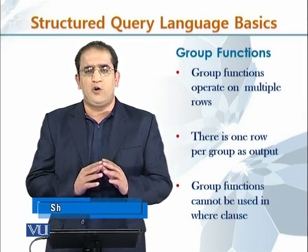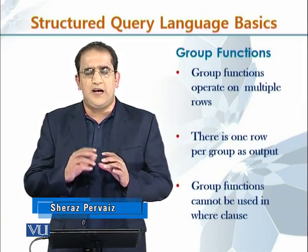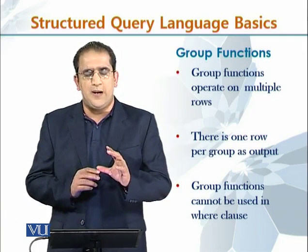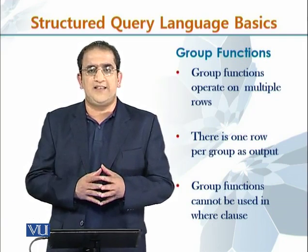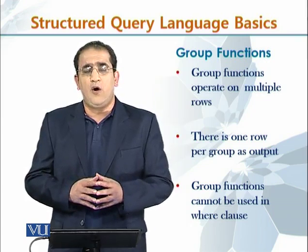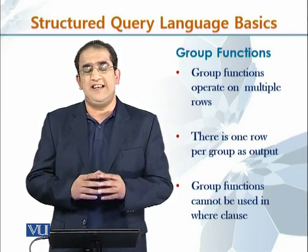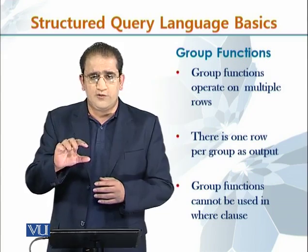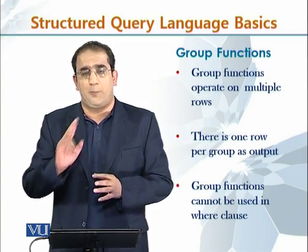For example, if you have 14 rows and the total number of groups is 7, then you will get the output of the group function as 7 rows — not 14. The reason is that group functions operate on groups of rows, or multiple rows, and they generate one output per group.